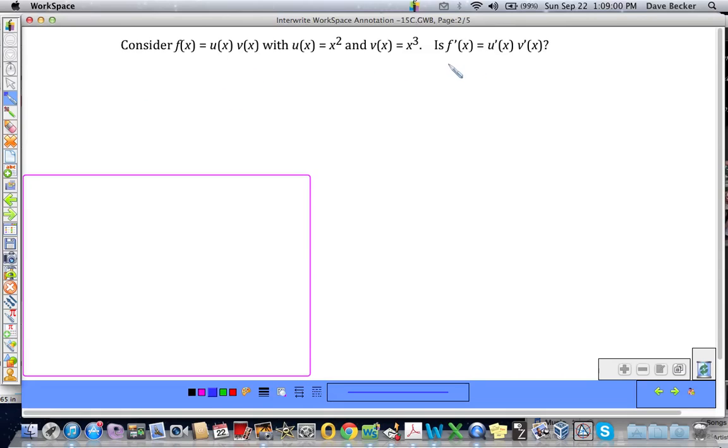But let's first test this out. So, is f prime of x equal to u prime of x, well, if u of x is x squared, then u prime of x is 2x times the derivative of v times 3x squared. And if we simplify that, that's equal to 6x cubed.